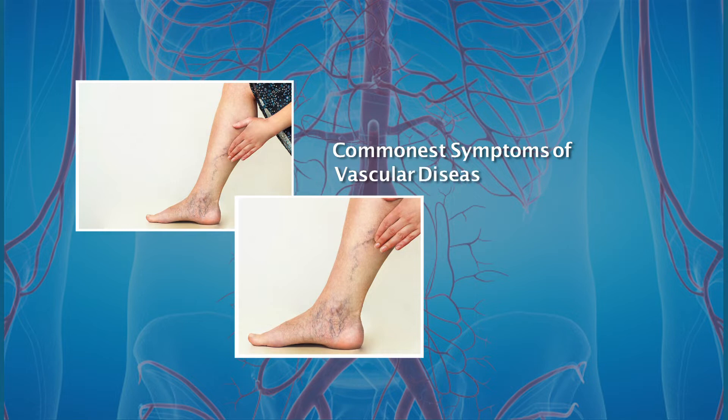The commonest symptoms of vascular diseases are pain and cramps in the leg, and swelling or edema of the legs. The commonest symptoms of venous diseases are dilated and tortuous blood vessels in the leg, swollen limbs, itching, discoloration, pigmentation, or a non-healing ulcer in the leg which is very resistant to heal.